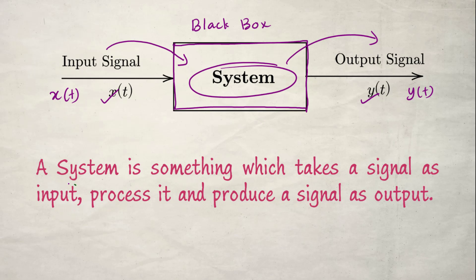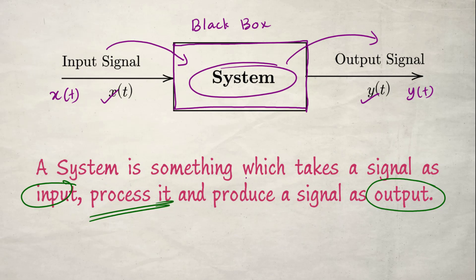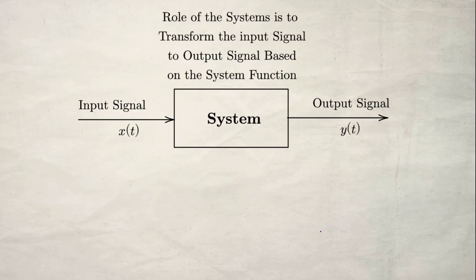A system is something which takes a signal as input, processes it — and this word 'process' is very important — and produces a signal as output. We need an input signal given to the system, an output signal coming out of the system, and the system processes the signal to produce the output signal. So the definition: a system is something which takes a signal as input, processes it, and produces a signal as output.